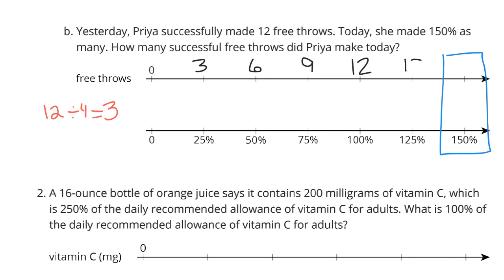So 12 was our 100%. 3 was the 25%. And if you keep going on this number line, you'll get the solution of 18 free throws.